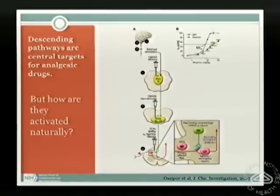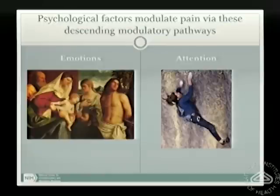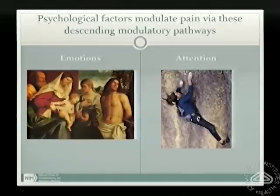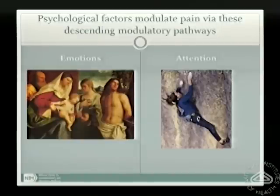How are they activated naturally? This is where psychology comes into effect. Psychological factors modulate pain via these descending modulatory pathways that are targeted with centrally-acting analgesic drugs. The two main components of psychological modulation of pain are those involved in emotions — how emotions modulate pain — and also attentional focus, how attention and distraction alter pain.